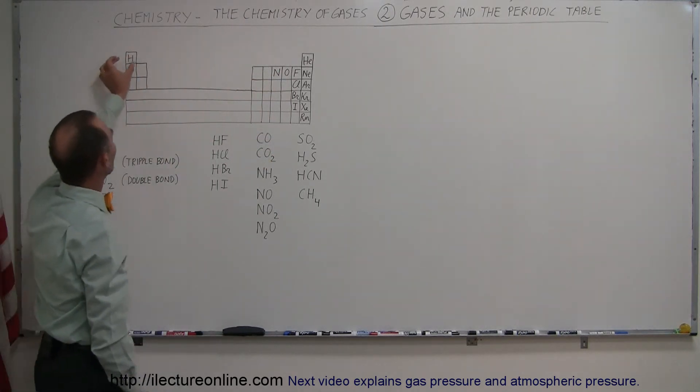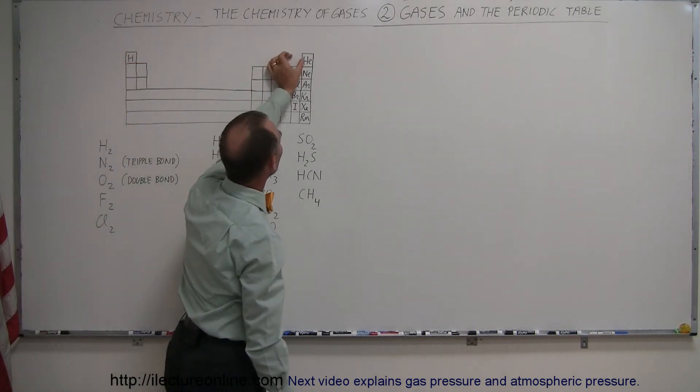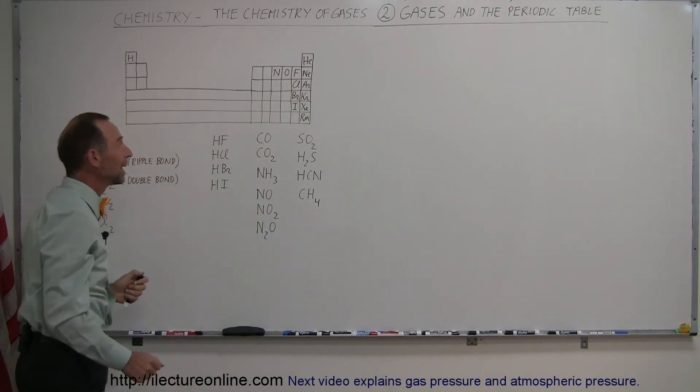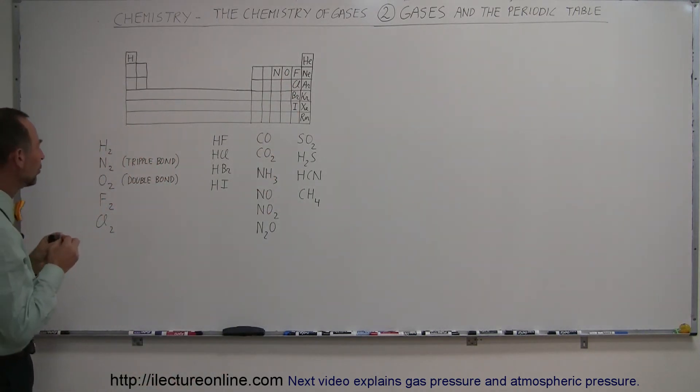Hydrogen could actually be over here in the periodic table because it has very much the same properties as these elements right here. And so they form diatomic molecules.